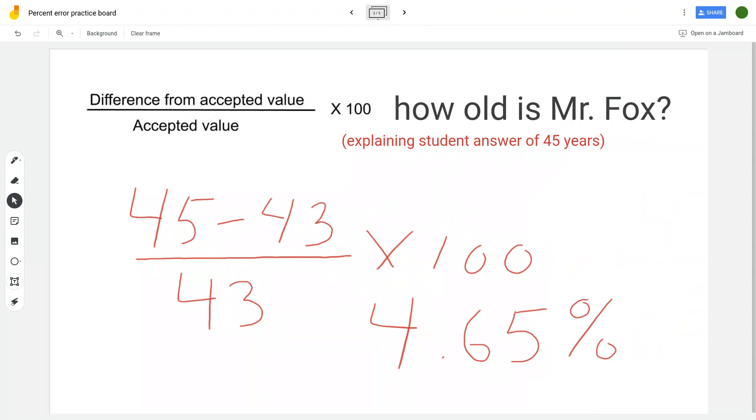So we do 45 minus 43 in the numerator over 43 which is the accepted value, we multiply that by 100 and we come up with an answer of 4.65 percent. So that's pretty close to 43, it was only two away, so we had a low percent error of 4.65. So that was a good close guess.